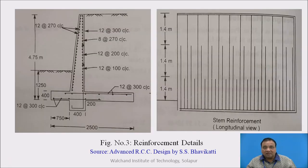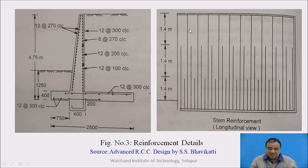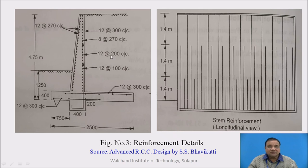As shown in figure 3, one third of the bars are curtailed at 1.5 meters, the next one third at 2.8 meters, and the remaining one third of every third bar goes up to the top. At the lowest section it is 12 mm diameter at 100 mm center to center; above that, 200 mm center to center; and above that, 300 mm center to center — all the same 12 mm bars.